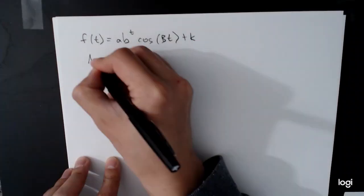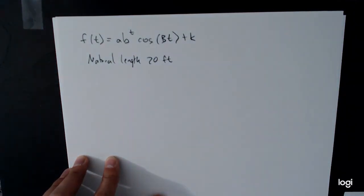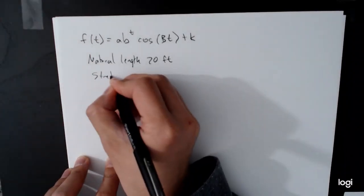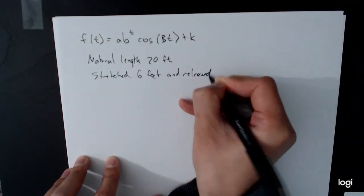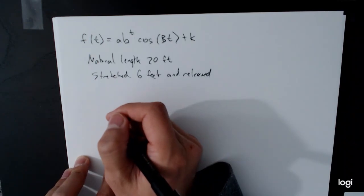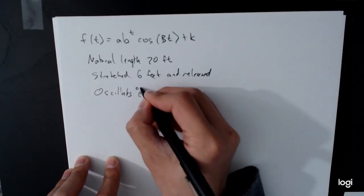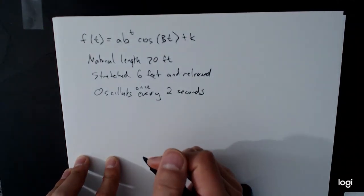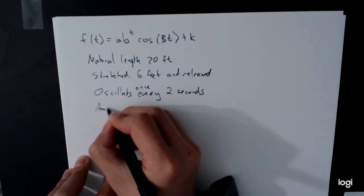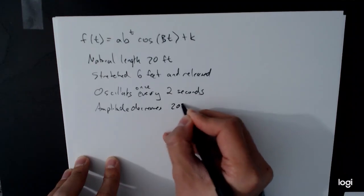We have the natural length. It's 20 feet. We have that the amplitude, let's see, that have released, stretched by 6 feet. We have that it oscillates every 2 seconds, once every 2 seconds. And then we have that the amplitude decreases 20% per second.